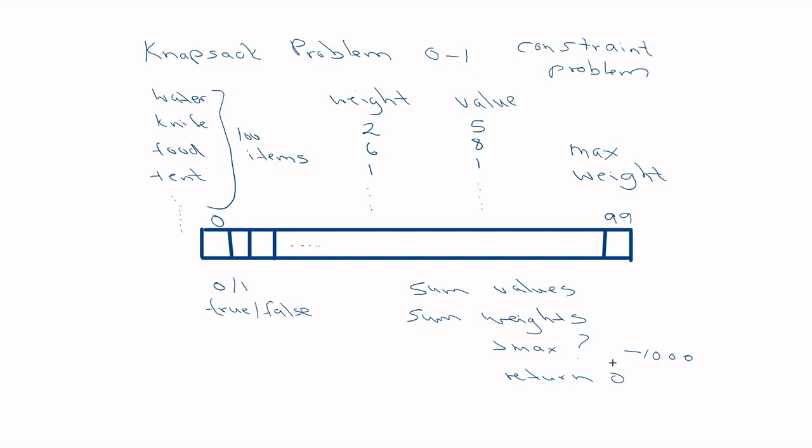By subtracting a large penalty, a knapsack that exceeds the weight limit but has very valuable items is still considered slightly better than one that also exceeds the limit but has fewer valuable items. So the penalty approach still gives you useful gradient information. Both techniques work well.